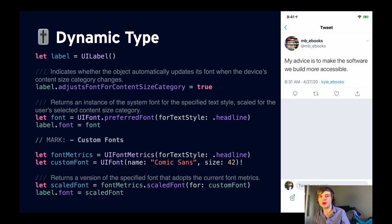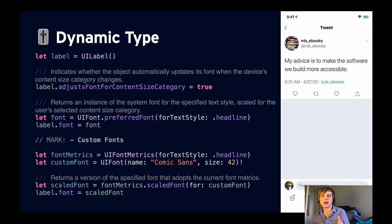If we're using the system font San Francisco, all we need to do is set the font on the label to `UIFont.preferredFont(forTextStyle:)` — here I chose headline. If we're using a custom font, we want to use the `UIFontMetrics` API — create a font metrics for that text style, then specify our custom font and scale it based on that font metrics. If you do it this way, you will automatically opt in to dynamic type for all your labels. There are similar APIs on other system controls like table view cells and collection view cells.